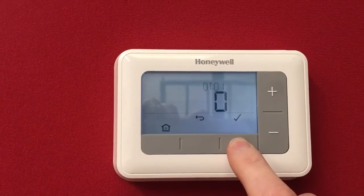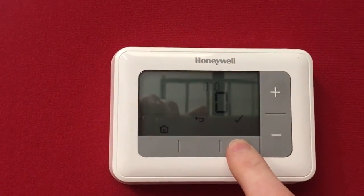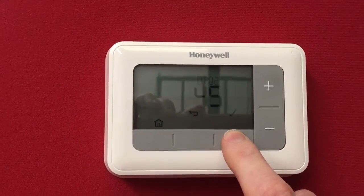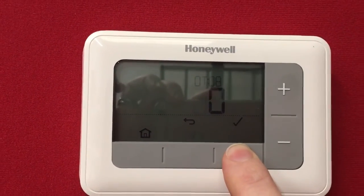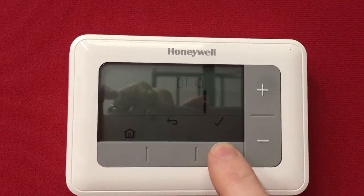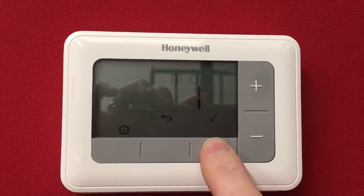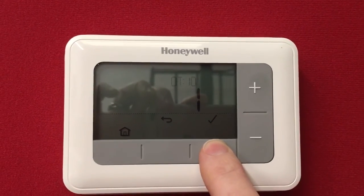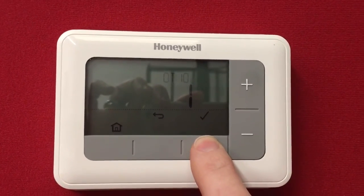So then you want to go down to OT 10. You want to go all the way down to open therm setting 10. This is where you turn outside temperature compensation on and off. So currently I've got OT 10 to 1, which is the use of outside temperature compensation.